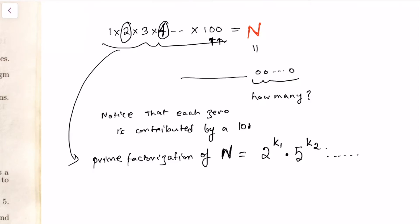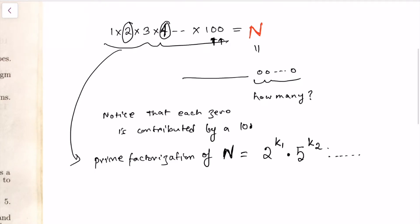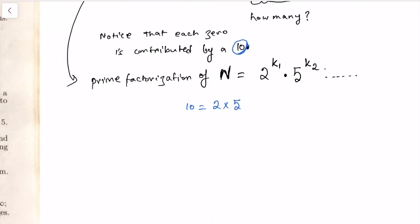The clever thing to realize is this: each time a 10 is created, we need one two and one five. Now there are many more twos than fives, because every fifth number is a multiple of five, but every second number is a multiple of two. So there are really a lot more twos available than the number of fives.